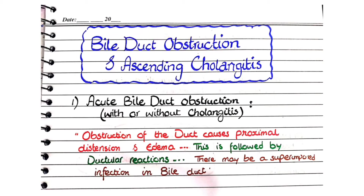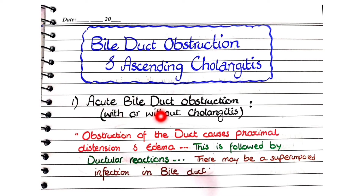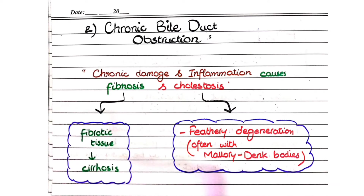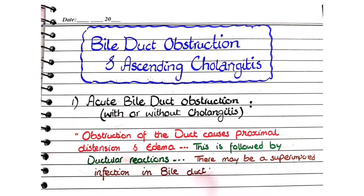Ascending cholangitis is a complication of bile duct obstruction. We will first understand the pathological features of acute bile duct obstruction with or without cholangitis, and then study the pathological features in chronic bile duct obstruction.